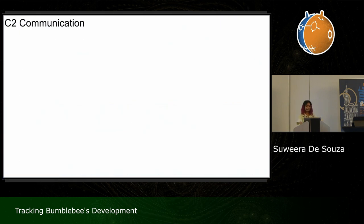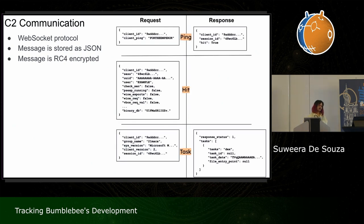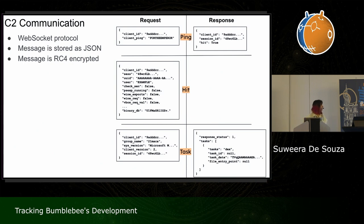Now let's talk about C2 communication. Currently, Bumblebee uses a WebSocket protocol and creates messages in JSON format that are RC4 encrypted before sending as a request or receiving as a response, with keys in the main DLL file. Here is a truncated version of what those messages look like — I've labeled them as ping, hit, and task to explain the flow better.